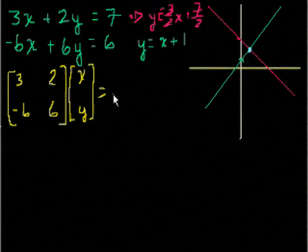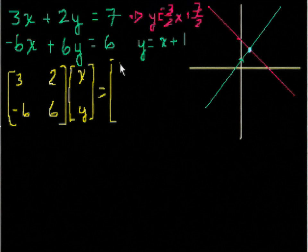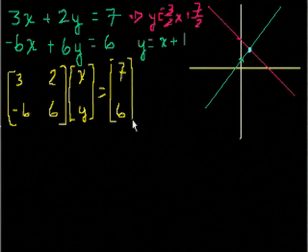And if I were to set that equal to another column vector matrix, 7, 6. Now you might want to pause it and actually just try to multiply this out the way that we have learned to multiply matrices and you will see that you get the same thing. But I will do it now in case you don't want to do it yourself. So let's just multiply these two matrices. Let's multiply this matrix out and see what happens.